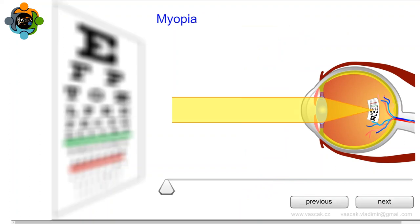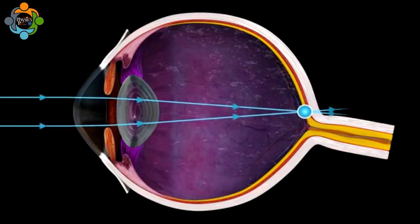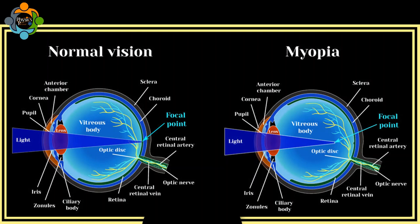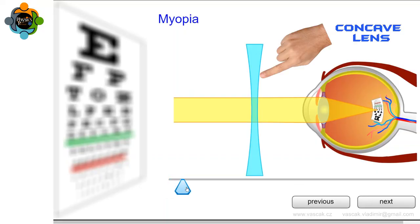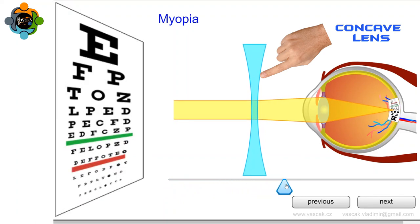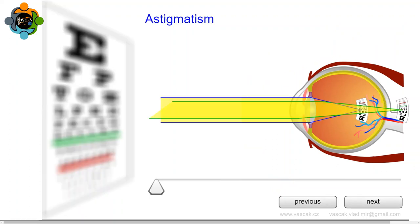Next, let's talk about myopia or nearsightedness. This is the opposite of hyperopia. Here the eye focuses light in front of the retina instead of on it. This is usually because the eye is longer than normal or the cornea is excessively curved. Consequently, distant objects appear blurry while close objects are seen clearly. The physics solution to myopia is the use of diverging or concave lenses. These lenses spread out the incoming light rays so they focus on the retina, correcting the refractive error and improving distant vision.